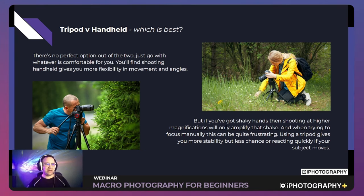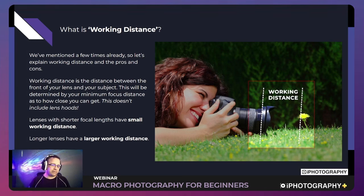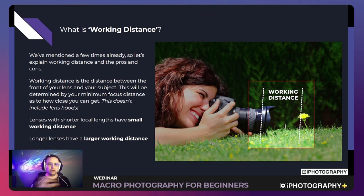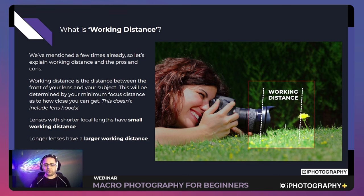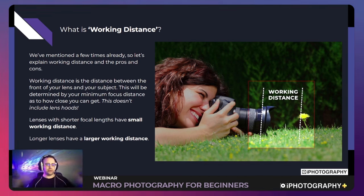Let's explain working distance. Working distance is the distance between the front of your lens and your subject — determined by your minimum focus distance. Even if you use a lens hood, it does not count toward working distance; it's measured from the front glass element to the nearest point of your subject. Lenses with shorter focal lengths — 60mm and below — have a small working distance, meaning you'll be quite close to your subject.